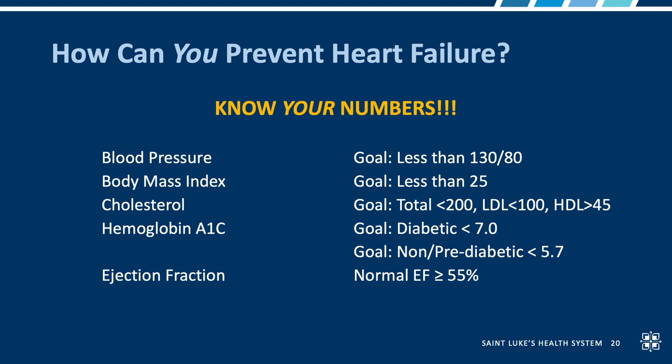The hemoglobin A1C is a test we use to screen for diabetes. In a diabetic patient we want the A1C less than 7% with good control of diet and medicines. For patients who are not yet diabetic or are pre-diabetic, we like the A1C to be less than 5.7%. And finally, a number called the ejection fraction, which we'll talk more about later — that has to do with how well the heart is squeezing. We aim for a normal ejection fraction, and normal is greater than or equal to 55%. It's good for you to know these numbers and keep track of them over time.